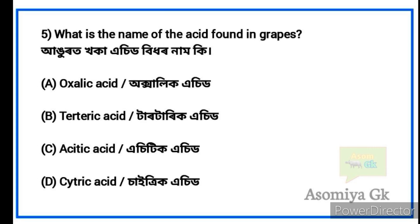Next question: What is the name of the acid found in grapes? Option B: Tartaric Acid.